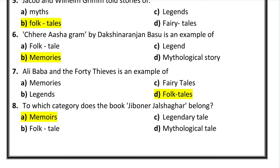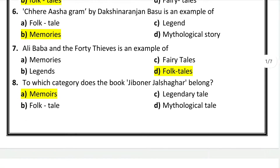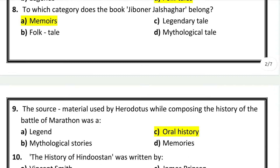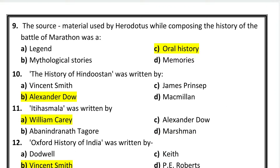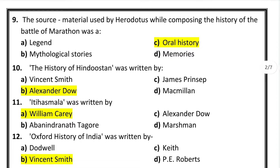Question number 8: to which category does the book Jeevaner Jalsagar belong? The correct answer is memoir. Question number 9: the source material used by Herodotus while composing the history of the battle of Marathon was — the correct answer is oral history.